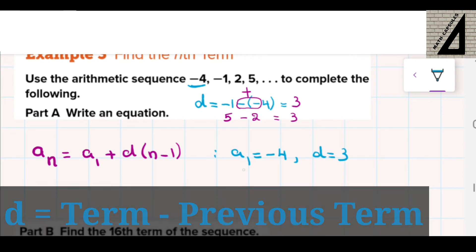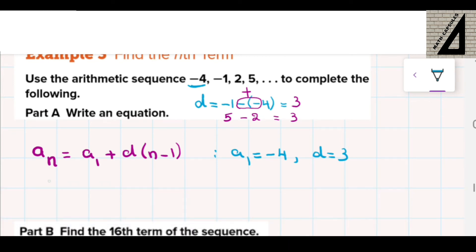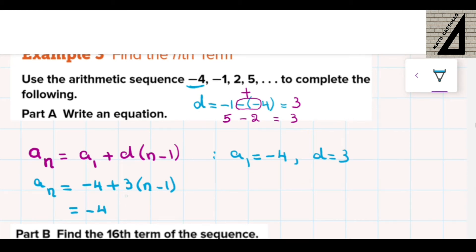Now I have a sub 1 and d, I can substitute in this formula. So a sub n equals a sub 1, that is negative 4, plus d, that is 3, times n minus 1. You can leave it like this, or you can simplify it by distributing 3 on this bracket. It will be plus 3n minus 3.